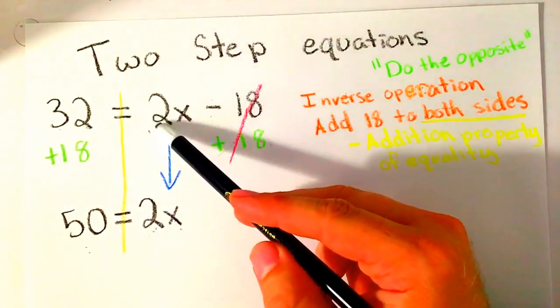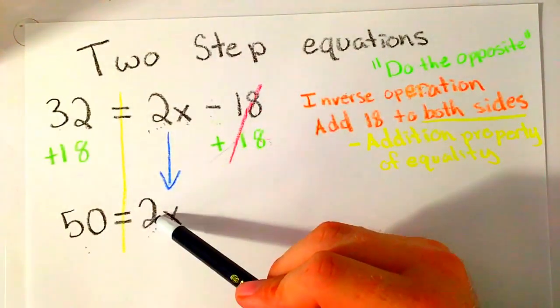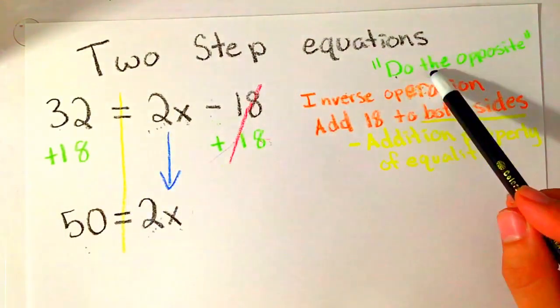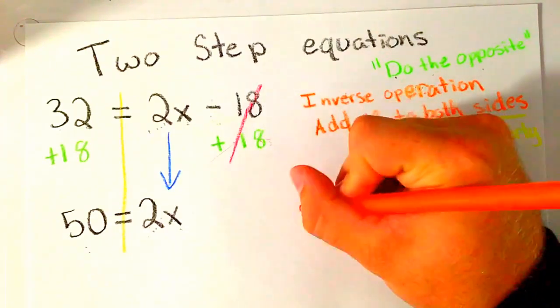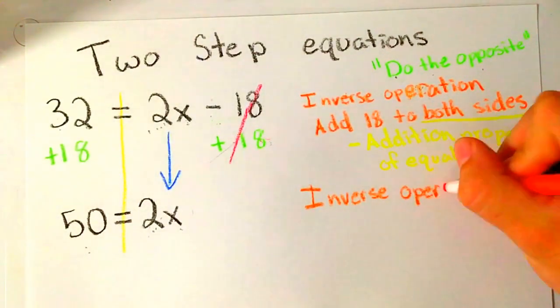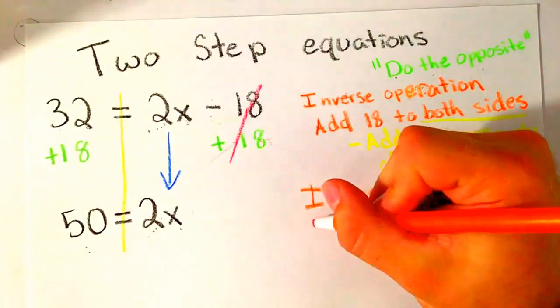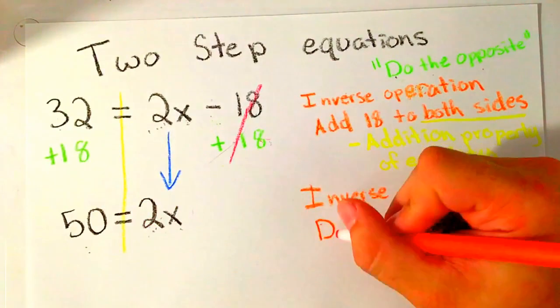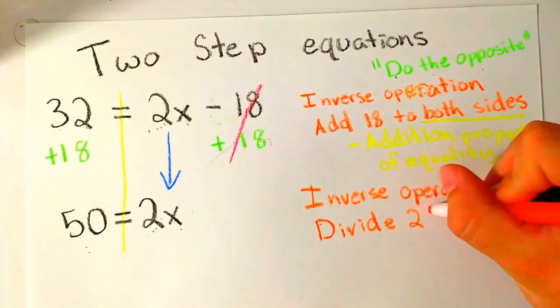What is happening here? What's happening between these is multiplication. We need to do the opposite, so we're going to do another inverse operation. We are going to divide because what's happening here is multiplying. We do the opposite, so we divide by 2 on both sides.